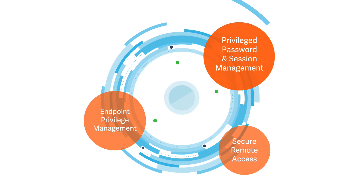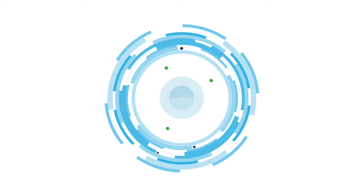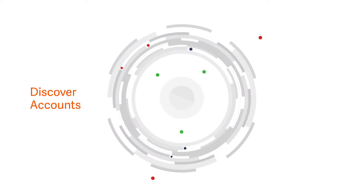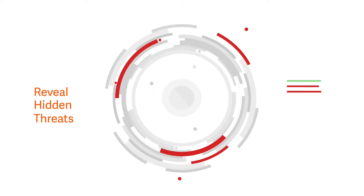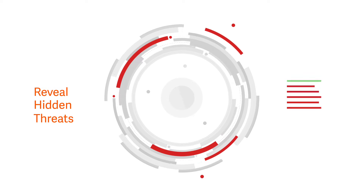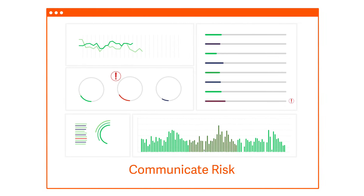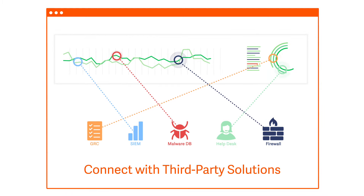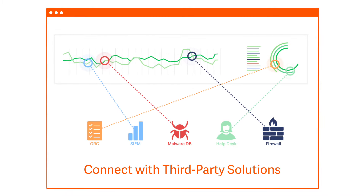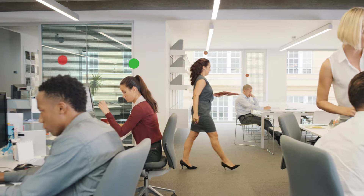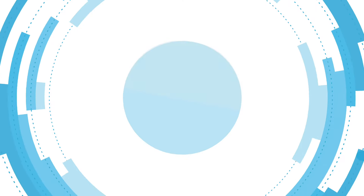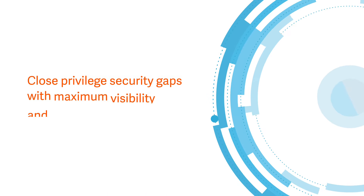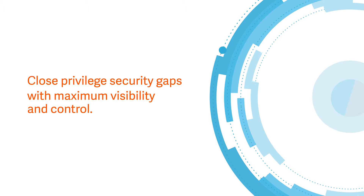Each delivers a broad and deep feature set, and all share a common interface backed by powerful platform capabilities. Automatically discover all assets and privileged accounts in your environment. Reveal hidden threats with vulnerability intelligence and behavioral analytics. Communicate risk with hundreds of customizable reports. Connect with third-party solutions to inform analytics and share data. And centralize and enforce privileged access policies enterprise-wide. Everything is tightly integrated, so you can close privileged security gaps with maximum visibility and control.